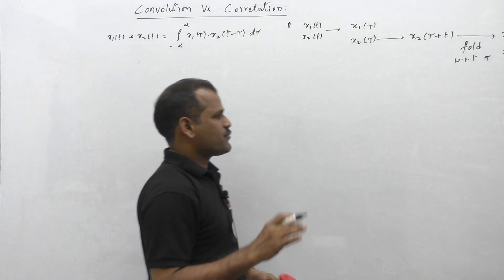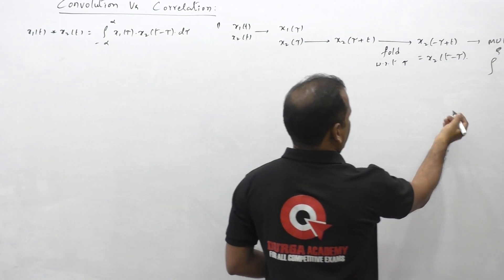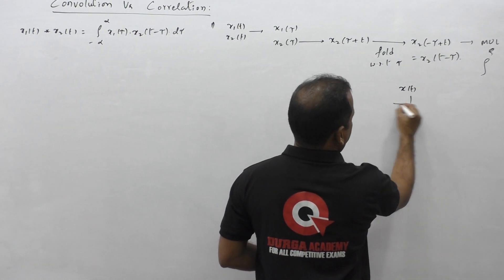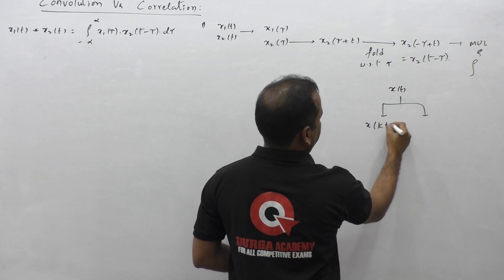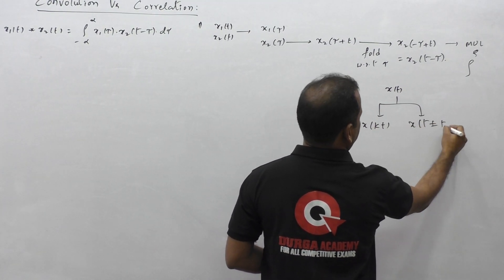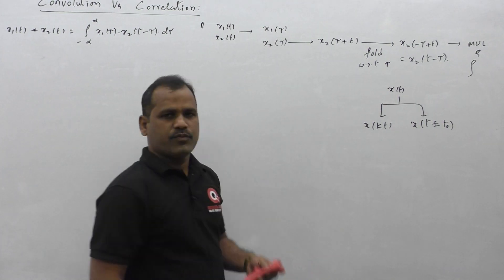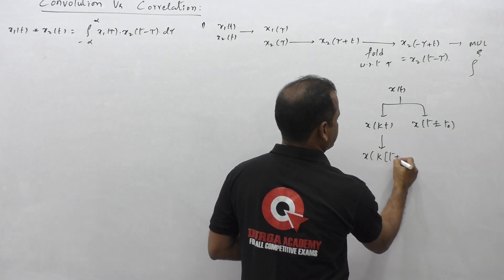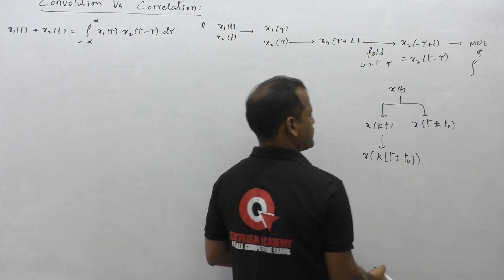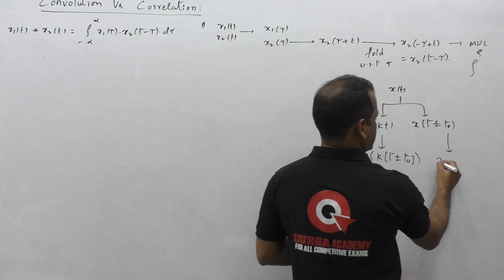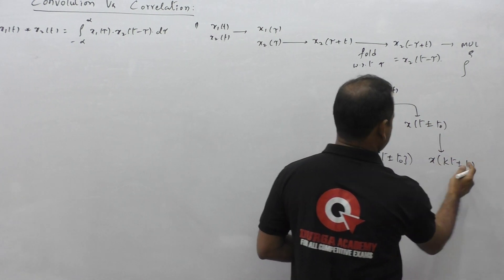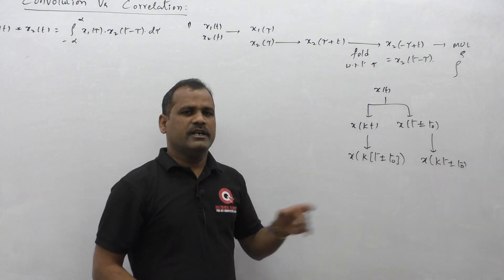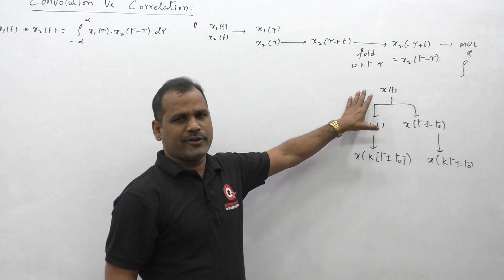And then we multiply and integrate — that is the convolution integration. Now let us recall the format for shifting and scaling of already scaled and shifted versions: x(t) scaled is x(kt); shifted is x(t + r - t0). If we want to shift the scaled version, we write k*(t + r - t0). If we scale the shifted version, it is k*t + r - t0. Both are not the same, which is why we need a precedence rule for shifting and scaling operations.